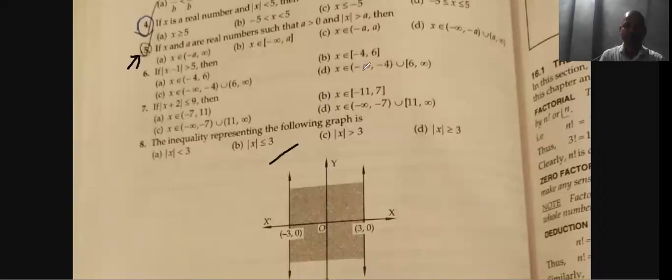If x and a are real numbers, such that a is greater than zero and mod x is greater than a, so you can tell me. So then, now look here, what are the values of x and a are real numbers, so what is a positive number, and how do you know about that?